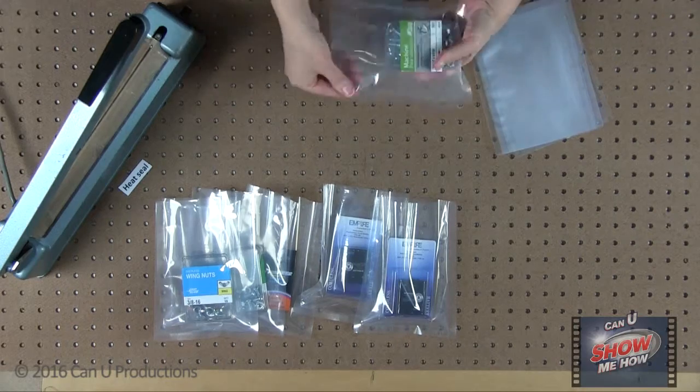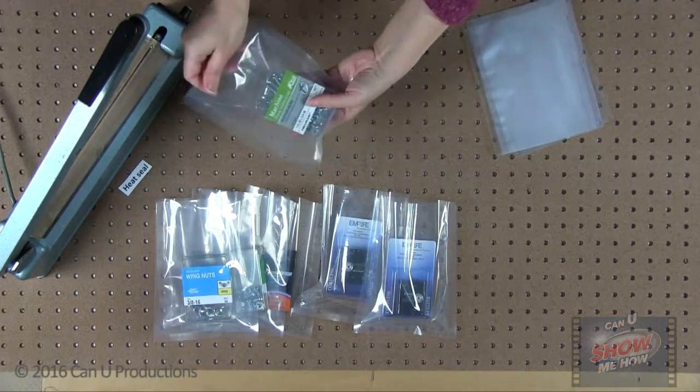Impulse heat sealers are ideal for sealing polypropylene and polyethylene bags up to 6mm thick.